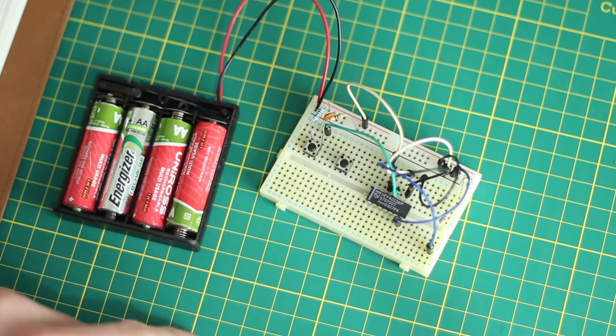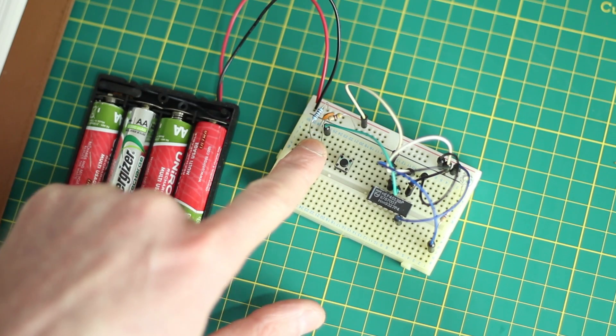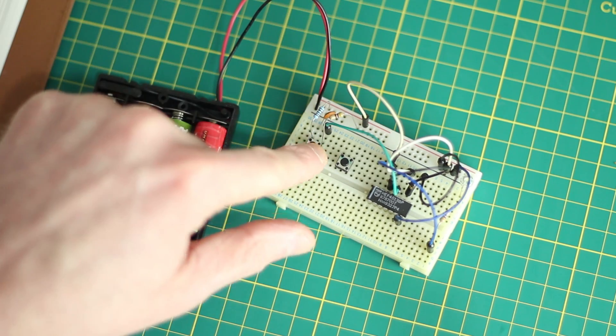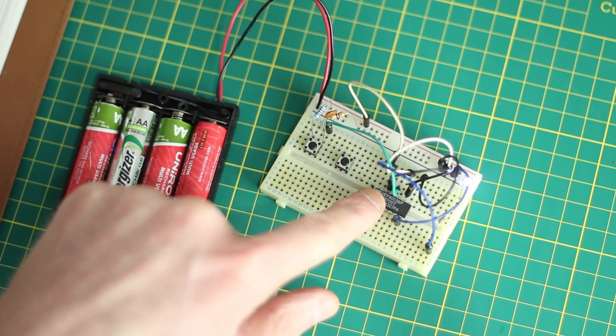Now because there are two outputs, one is high and one is low, and that's always the case. So at the moment the first one is low, and then if I press the button to clock the chip...